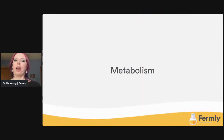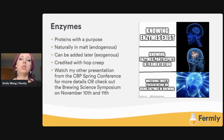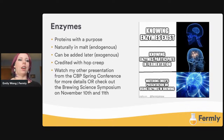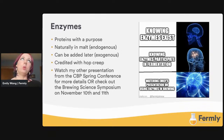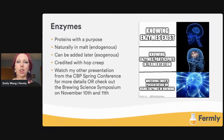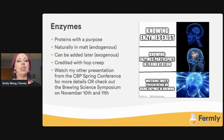Moving on to metabolism, which are biological reactions that take place in a living organism. Before diving into the types of metabolism, I'll briefly touch on enzymes. These are proteins with a purpose — they're naturally in malt, which makes them endogenous, meaning inside. You can also add them later, or exogenous, meaning on the outside. Enzymes are also mentioned in context of hops because they are largely credited with creating hop creep. I have a previous presentation on enzymes on YouTube through the Craft Beer Professional spring conference, and I'll be speaking at the Brewing Science Symposium in November.